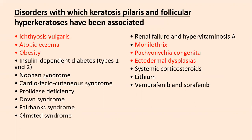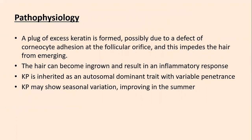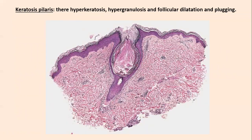A plug of excess keratin is formed, possibly due to a defect in corneocyte desquamation at the follicular orifice; this also impedes hair from emerging. Hairs can become ingrown and result in an inflammatory response. KP is inherited as an autosomal dominant trait with variable penetrance and shows seasonal variation — worse in winter and improving in summer. Histopathologically, KP shows hyperkeratosis, hypergranulosis, follicular dilatation, and a large keratin plug occupying the hair follicle. KP starts in children, mostly on the extensors of the upper arms, and worsens around puberty.